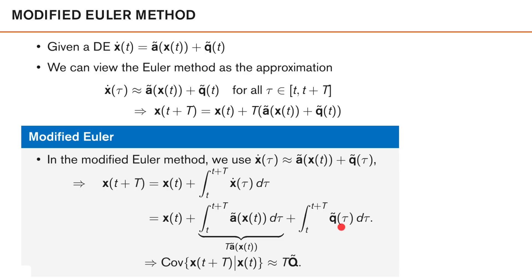Given this, how should we select the covariance matrix of the discrete time motion noise? To answer the question, we compute the covariance of X(t+T) given X(t). If X(t) is known, both the deterministic terms are deterministic, and we only get the contribution from the noise term. We actually looked at an integral equivalent to this when we looked at the covariance of the Wiener process, and concluded that the covariance grows linearly with the length of the time interval. So according to the modified Euler method, we should select the discrete time noise covariance as T times Q̃, where Q̃ is the covariance of the continuous time noise process.